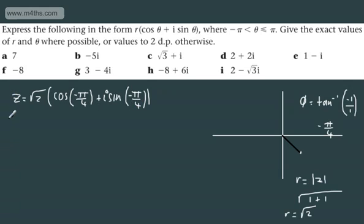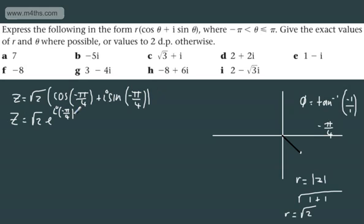Whilst we're here, we could write it in the exponential form introduced in the first video. We can write Z as root 2 e to the i times minus pi by 4. That is in exponential form. So we now have polar form, exponential form, and Cartesian form.